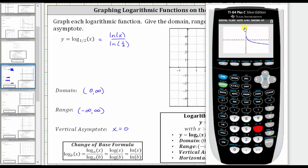Notice how the vertical asymptote is x equals zero. The domain is the open interval from zero to infinity, and because the graph goes up and down without any holes or breaks, the range is the open interval from negative infinity to positive infinity.